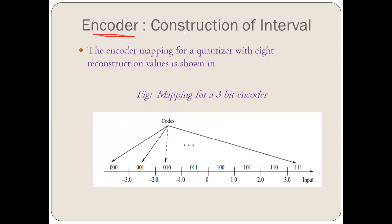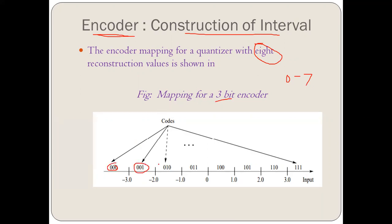The main work of the encoder is to construct the intervals. The encoder mapping for a quantizer with 8 reconstruction values is shown — the 8 reconstruction values go from 0 to 7. We represent these in 3 bits: 000, 001, 010, 011, 100, 101, 110, 111, corresponding to intervals from minus 3 to minus 2, minus 2 to minus 1, 0, 1, 2, and 3.